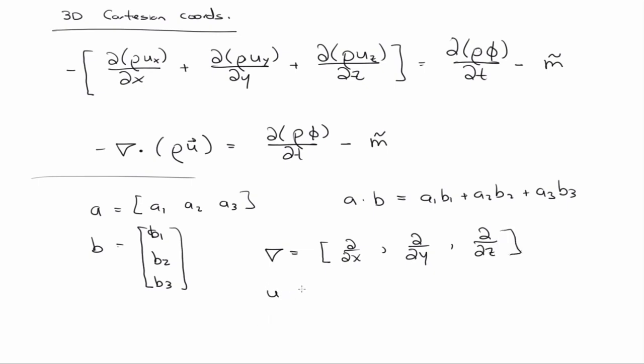And so then I have u equal to ux, uy, uz. So then I just take the dot product of the gradient operator with the vector u, ∂ux/∂x + ∂uy/∂y + ∂uz/∂z, like that.